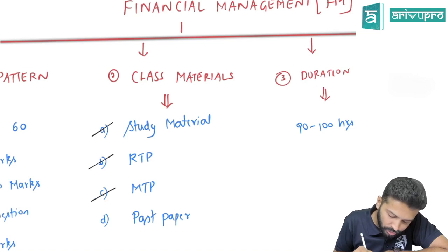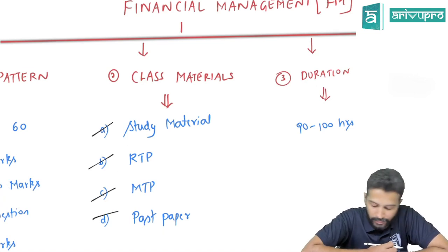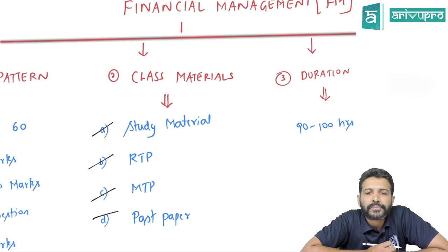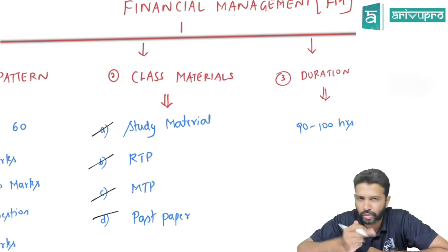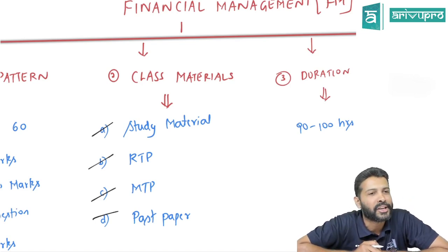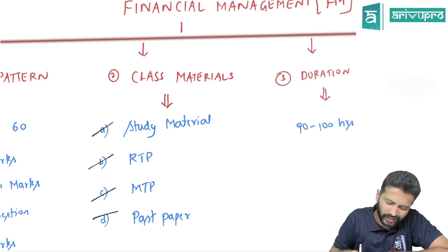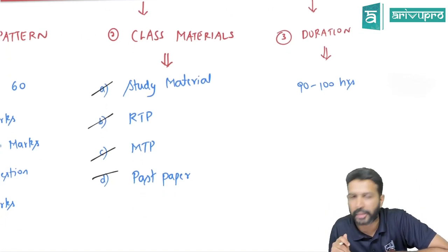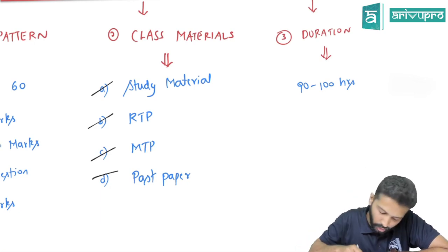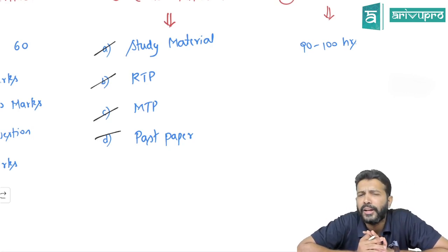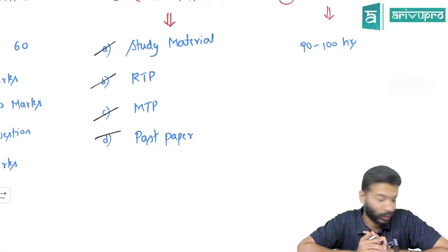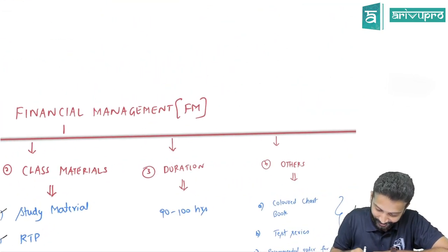Along with that, we've included questions from RTP, MTP, and past papers. RTP means Revision Test Papers, MTP means Mock Test Papers. Every attempt, ICAI releases these about two or three months before examination. Different or new types of questions from RTP and MTP, plus previous year examination questions, are incorporated into our material. Is this much sufficient?